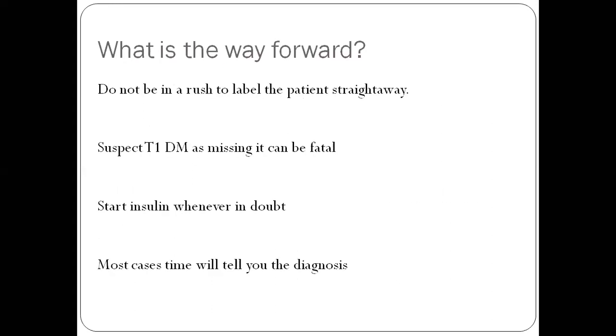So what is the way forward? You should not be in a rush to label the patient as type 1 or type 2 straight away. You should always suspect type 1 diabetes, because missing a diagnosis of type 1 diabetes can be fatal. Whenever you are in doubt, start with insulin, don't start with OADs. And in most cases, if you can't make a diagnosis, time will tell you what the correct diagnosis is.